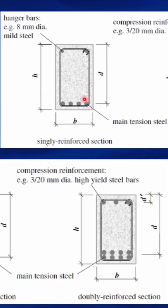In a singly reinforced section, the beam is being subjected to tension only. So in that case, you need to provide your main reinforcement only at the region where you have the tension. In this case, the tension region is the bottom part of the beam.